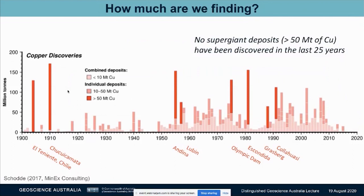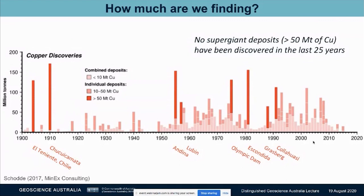So how are we going at finding that copper? In this graph, different copper deposits have been subdivided by how much metal is contained within them. The really dark colours show deposits with over 50 million tonnes of contained copper — they are the world's giants, real nation makers, significant in national economies. The surprising thing is that despite the expenditure of the last two decades, we haven't found any of these supergiants. We should be starting to see signs of them coming through, and we're not.